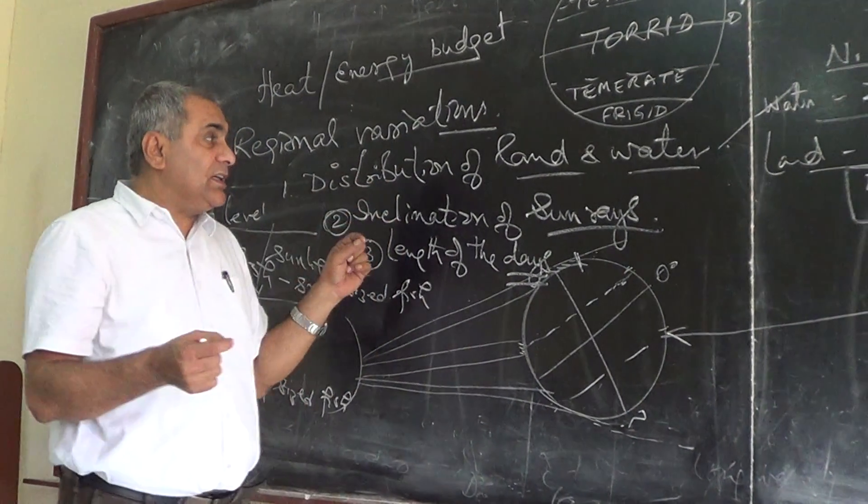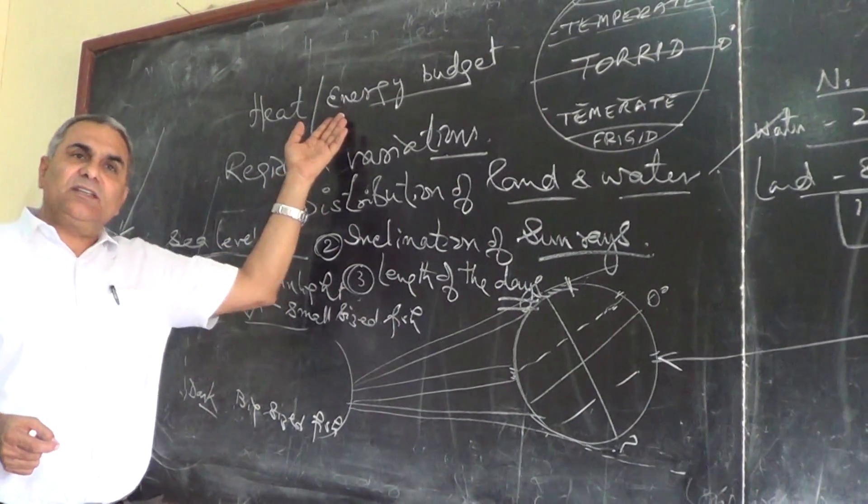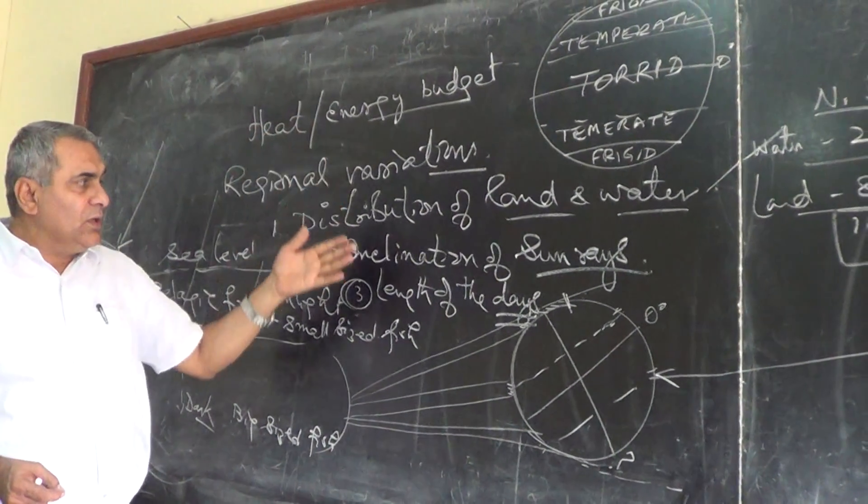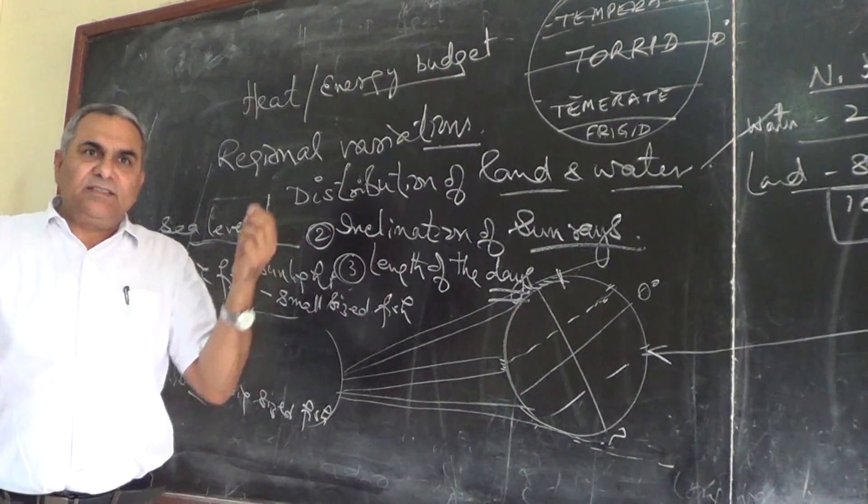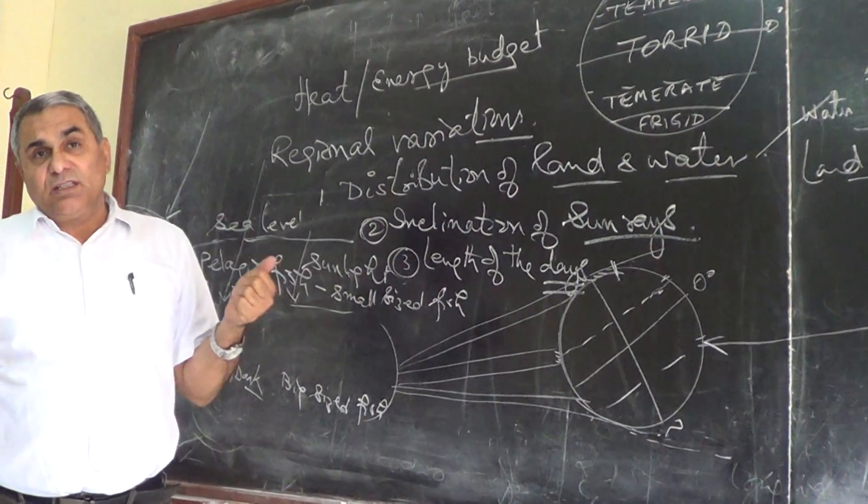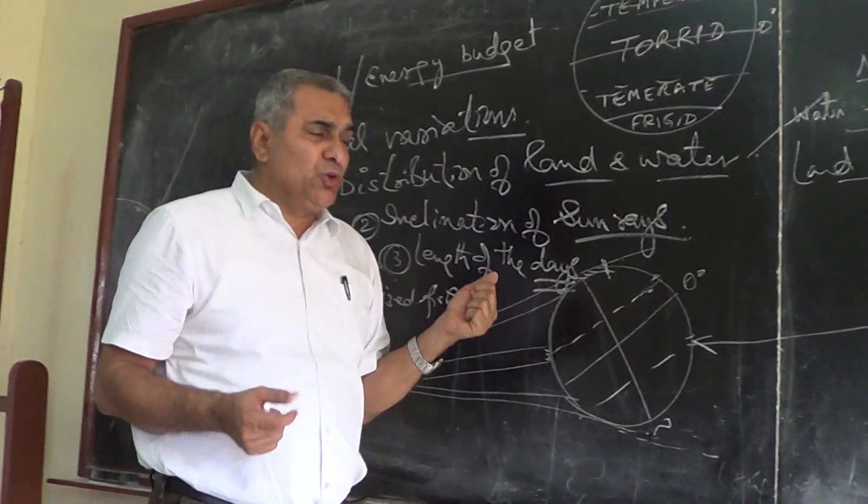It influences the heat budget in the global perspective. In the northern hemisphere, the heat will be affected by day and night length. Sometimes there are different positions like the position of the sun.